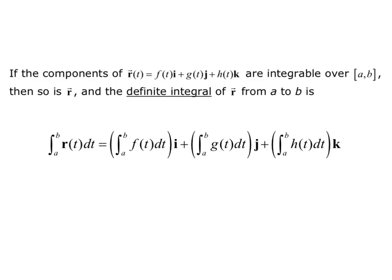Plus the integral from a to b of h of t dt times k. So we take the integral of each component separately, and then put it into a vector function.